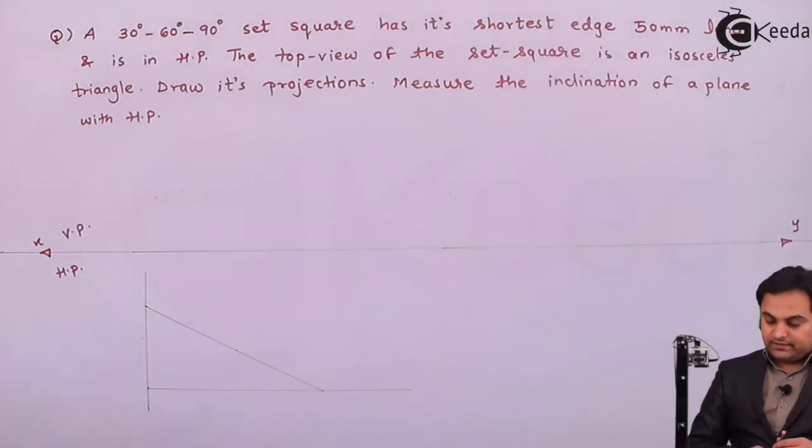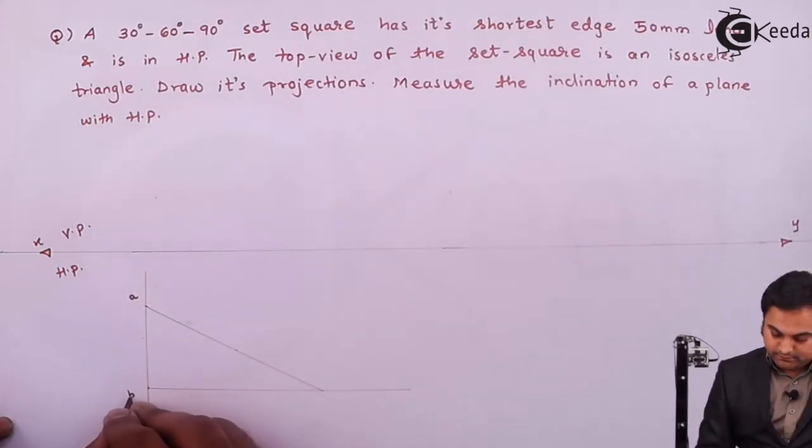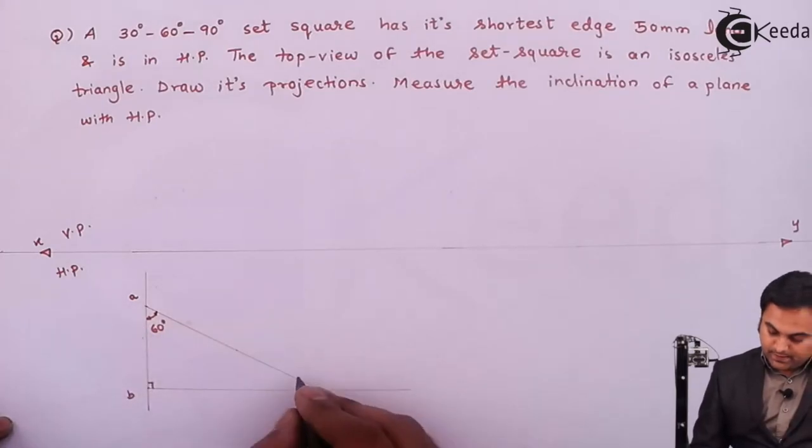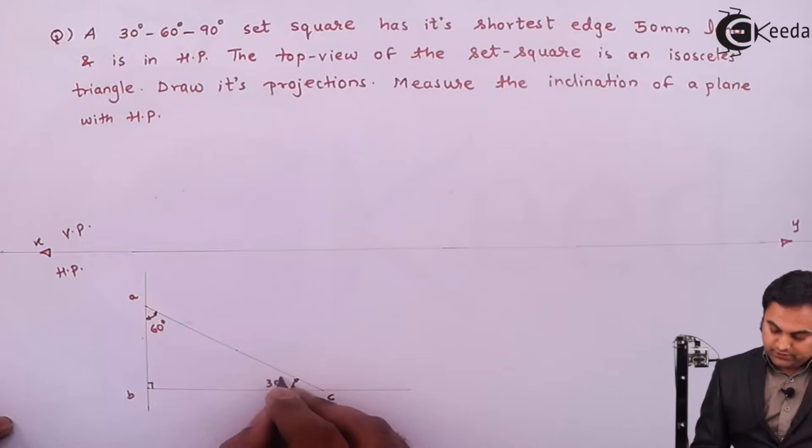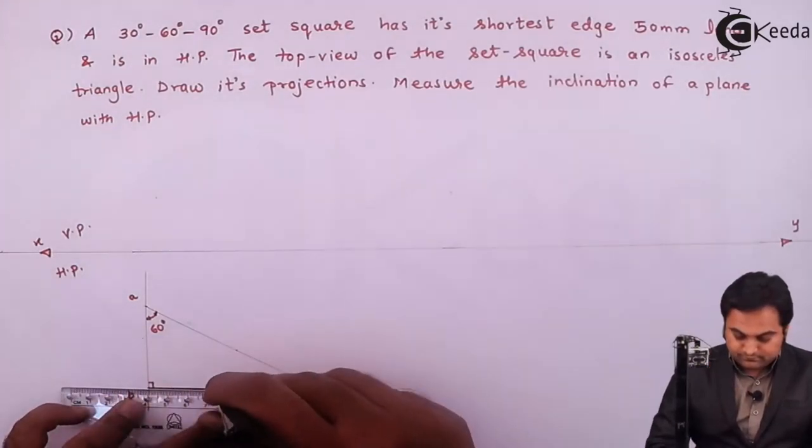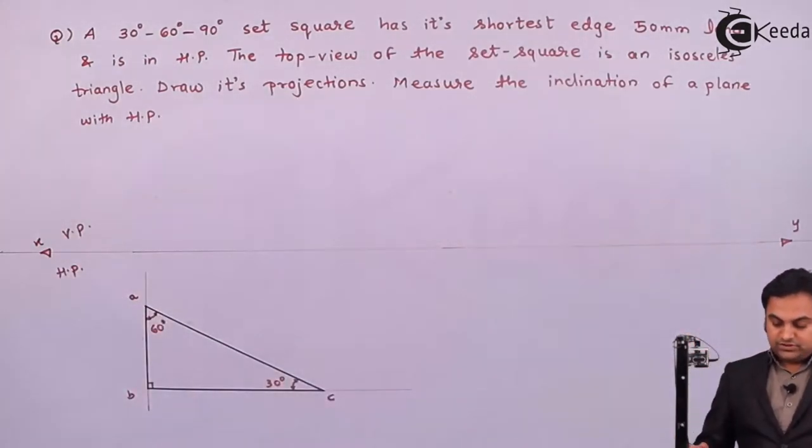And I'll give the notations to it. A, B and C. Here this angle is 90. This is 60 degree. And the remaining angle is 30 degree. So here I get the complete triangle. I'm going to make it dark. So this is the set square.